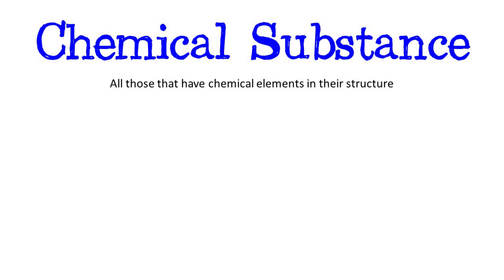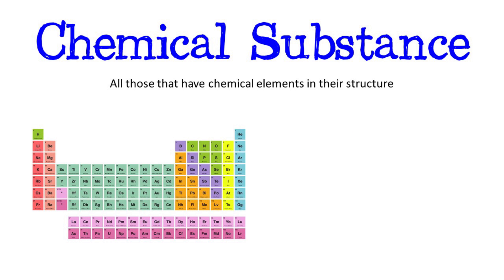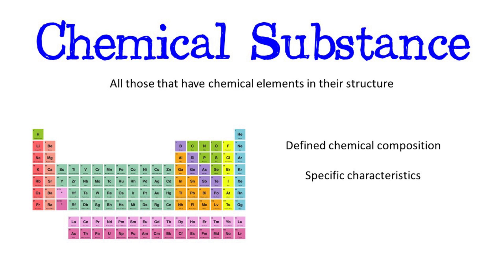Chemical substances are all those that have chemical elements in their structure, that is, they have a defined chemical composition and specific characteristics regardless of their origin. Substances can be in a solid, liquid, or gaseous state.